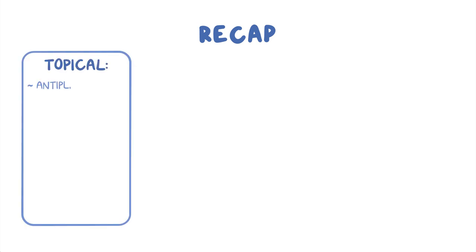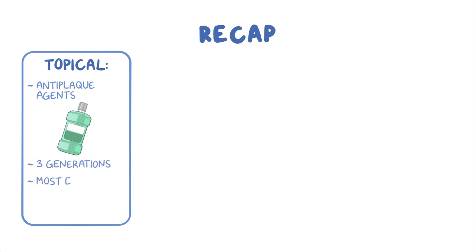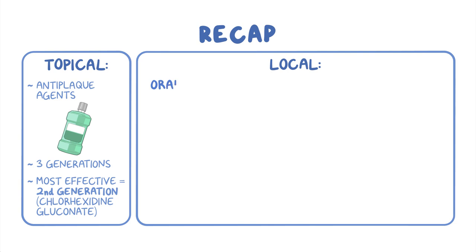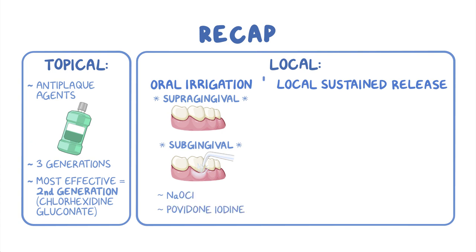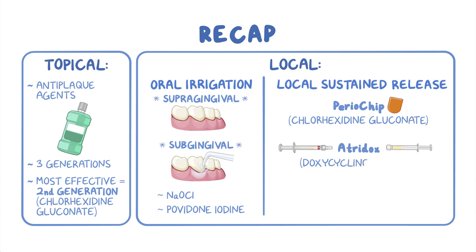The most common topically delivered medications are anti-plaque agents, which are usually delivered in the form of mouthwashes. Based on their antimicrobial and anti-plaque effects, these agents are subdivided into three generations. The most effective one is the second-generation agents like chlorhexidine gluconate. We have local delivery of medications, which includes oral irrigation and local sustained release. Oral irrigation is further subdivided into supragingival irrigation, which disrupts dental biofilm along the gingival margin, and subgingival irrigation, which reduces the pathogenicity of the polymicrobial biofilm in the subgingival environment. Common antimicrobial irrigants include sodium hypochlorite and povidone iodine. Local release products include periochip with active ingredient chlorhexidine gluconate, atrodox which contains doxycycline hyclate, and arestin with active ingredient minocycline hydrochloride.